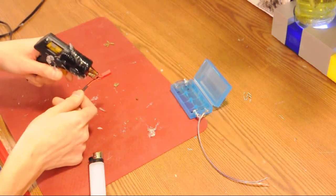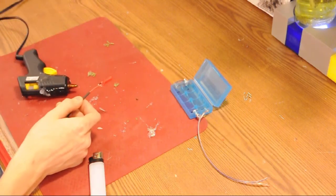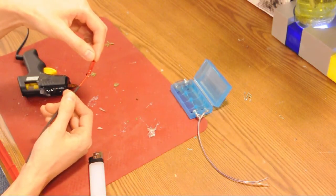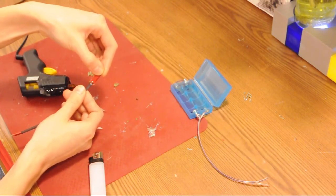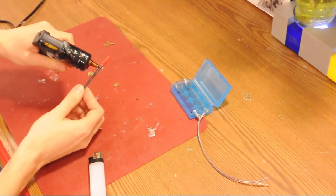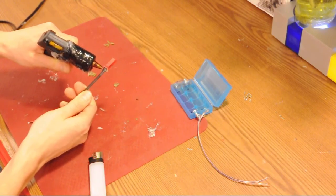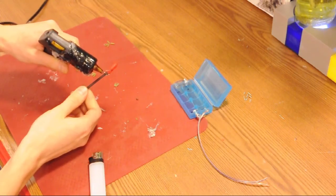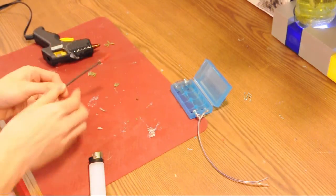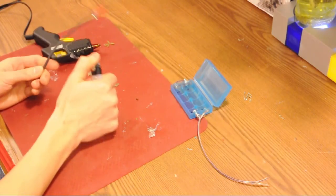This is to provide strain relief, essentially. It protects the wires from getting yanked out of the actual connector when you're pulling on it. I'll slide the heat shrink up a little bit right over the glue, and then apply more glue on top of the heat shrink here. So this is all just to add strength to the whole thing. I'll heat up the heat shrink now to cause it to shrink.